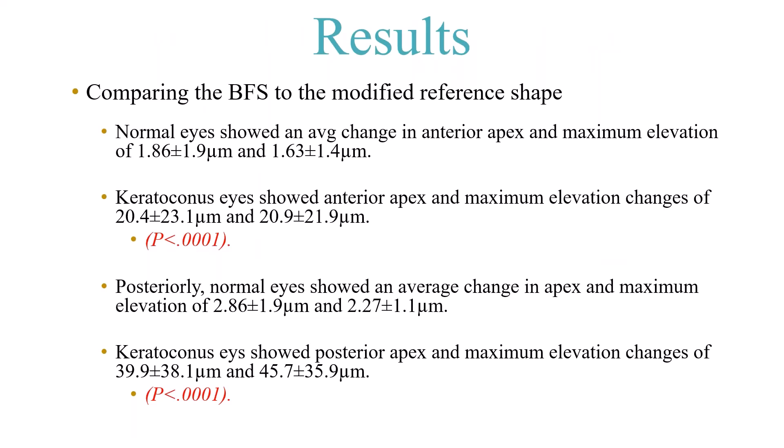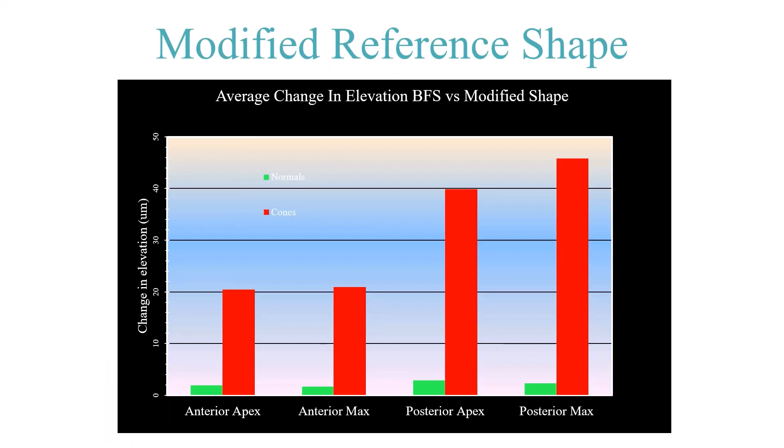In the population of 1,200 eyes, the change going from best fit sphere to enhanced reference surface on normal eyes was less than 2 microns anteriorly, while keratoconic eyes showed a change in excess of 20 microns anteriorly. On the posterior cornea, normals showed less than 3 microns change, while keratoconics showed changes in excess of 40 microns. This difference — with a p-value less than 0.0001 — is the basis for the left side of the Belin Ambrosio display.